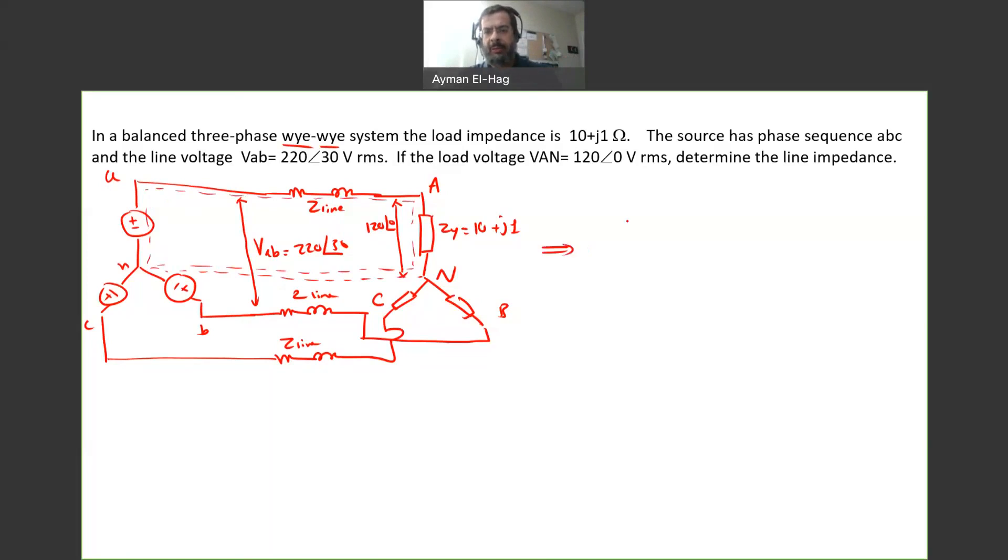So basically here I will have my A and this is my N. I will have my unknown here, which is my Z-line. I will reach to the capital A point. I will have here Z-Y 10 plus J1. I know this voltage, which is 120 angle of 0. Now we will have here the line current between the source and the load. I will call this as IAA. And this is my VAN. So it's a very simple circuit now. This three-phase system has been reduced now to a simple single-phase circuit from the basics of electrical circuit.